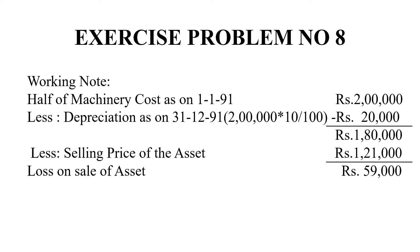We have a total of 4,00,000 asset on 1-1-91, but half of the asset was sold on 31-12-91. So half of the machinery cost on the date of purchase is 2,00,000. Depreciation at 10% is 20,000. So 2,00,000 less 20,000 gives us 1,80,000. Now, 1,80,000 worth of machinery has been sold for 1,21,000. So 1,80,000 minus 1,21,000 gives us a loss of 59,000.